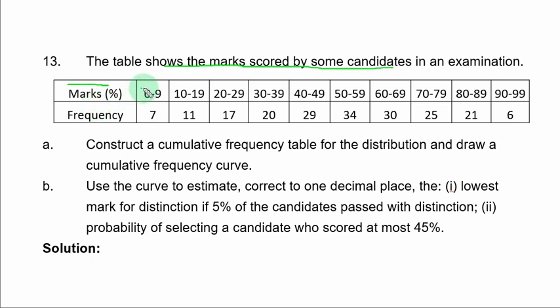0 to 9, 7 candidates. 10 to 19, 11 candidates. 20 to 29, 17 candidates. 30 to 39, 20 candidates. 40 to 49, 29 candidates.